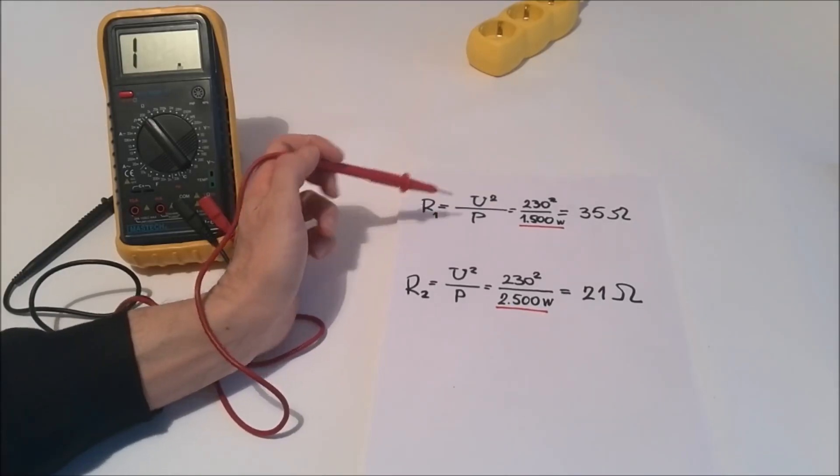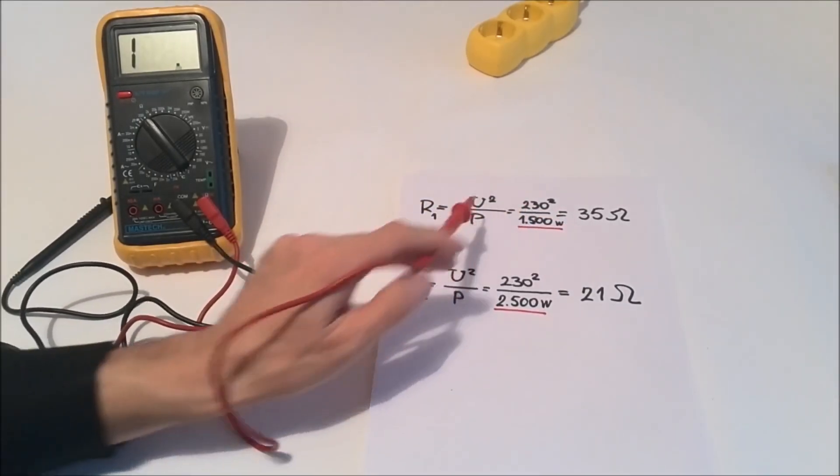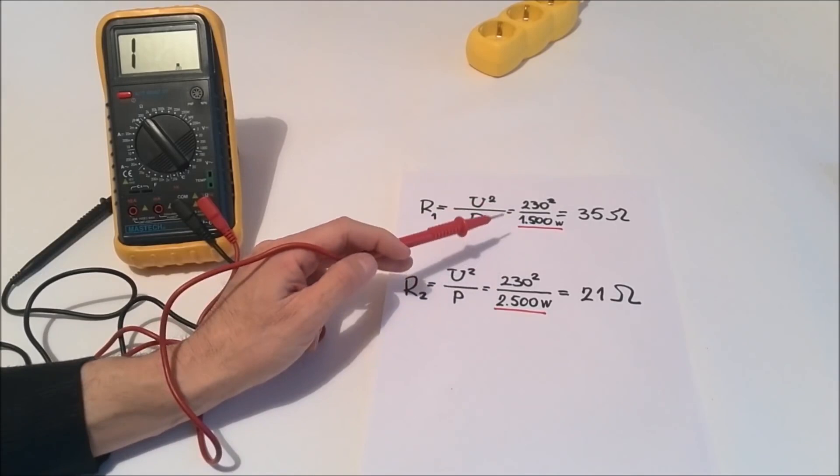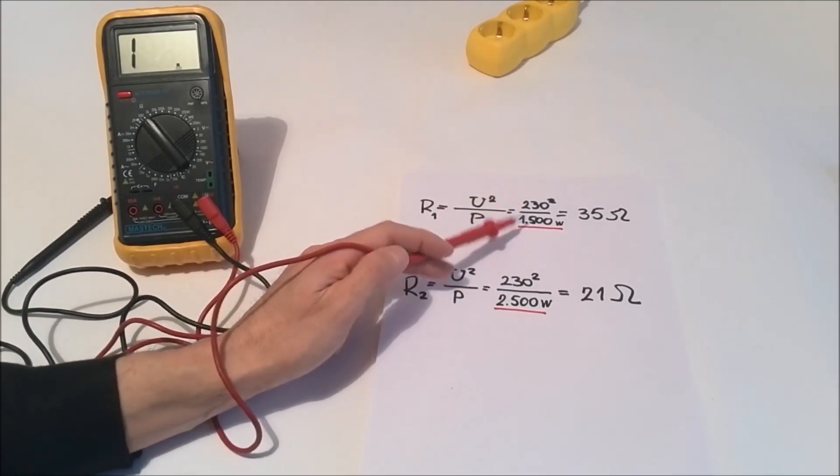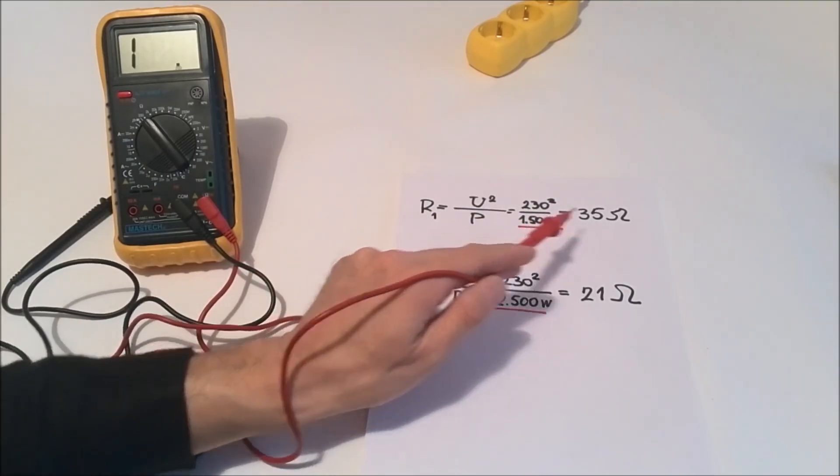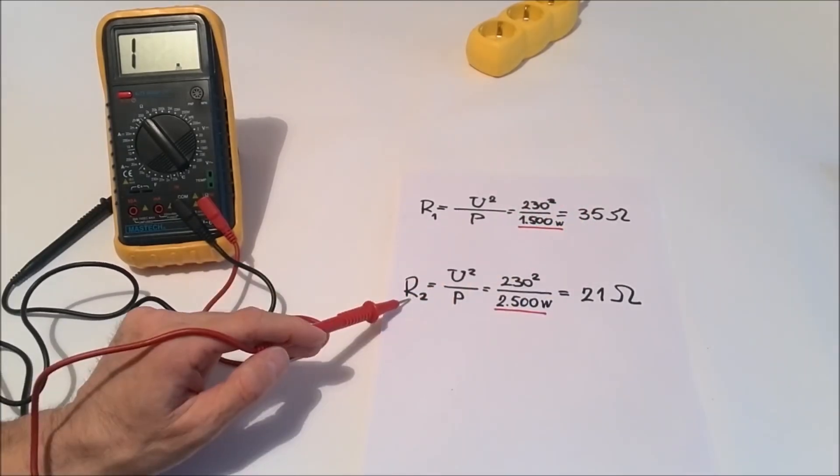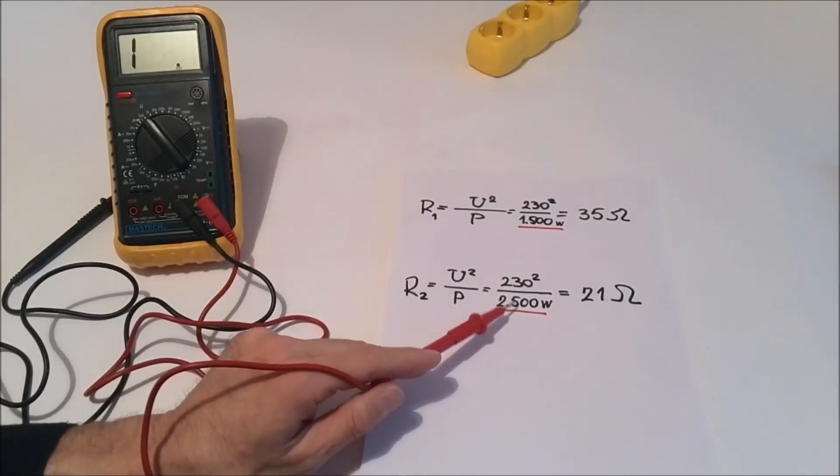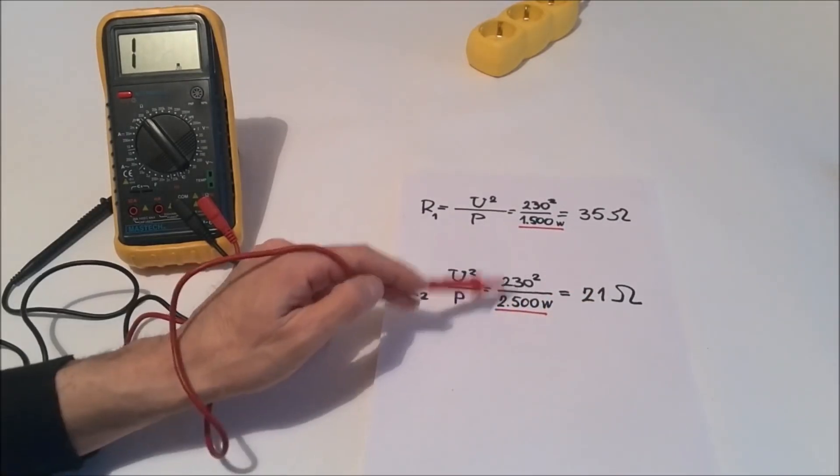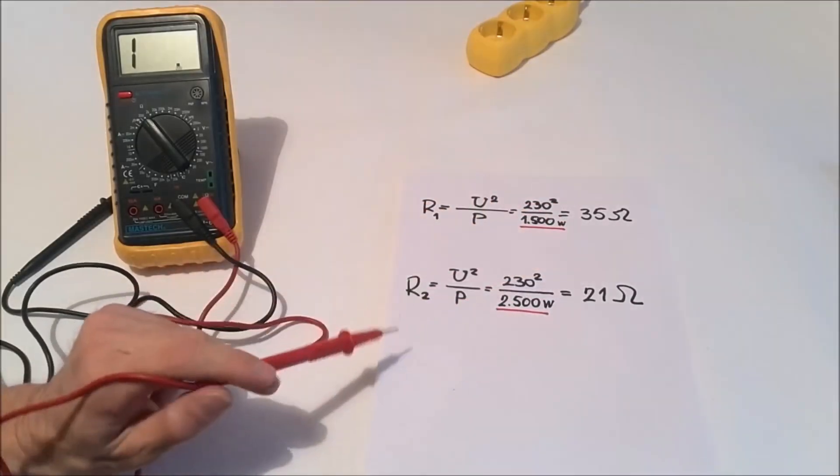So for a 1500 watt heater we expect to measure a resistance of about 35 ohms. In the second example for a 2500 watt heater we expect a resistance of 21 ohms. Power of the heater between these two values will have a resistance somewhere between previously mentioned values.